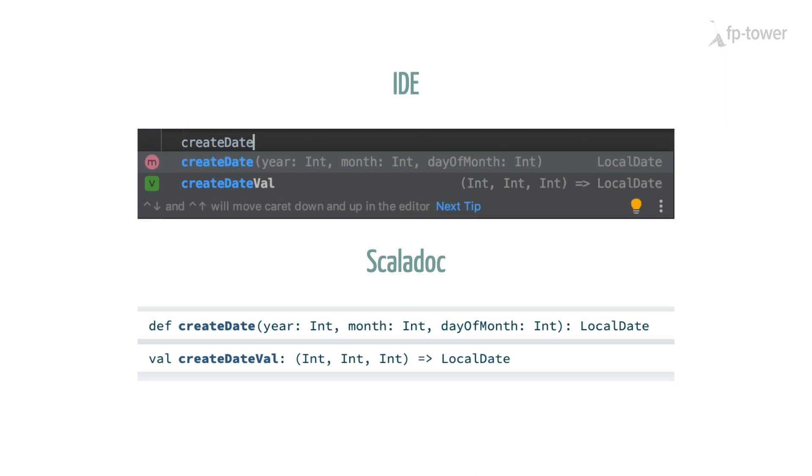This point becomes particularly clear when we look at the other parts of the tooling, such as IDEs or the Scaladoc. When we start typing createDate on our IDE, we'll get two proposals. One for the def function, and one for the val function. And as we can see, the def function is much more informative. We have access to the name of the arguments, which means that most likely we'll use createDate correctly.